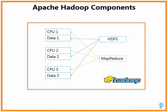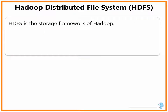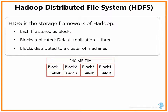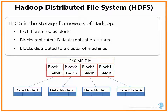Let us look at HDFS. HDFS is the storage framework of Hadoop. Each file in HDFS is stored as a block. Blocks are replicated with a default replication of 3 copies and a default block size of 64 megabytes, stored across clusters of machines. For example, if you store a 240 megabyte file into HDFS, it gets divided into 4 blocks of 64 megabytes each. If there are 4 nodes in the cluster, each block is replicated to make 3 copies, giving a total of 12 blocks, distributed so that no two replicas of the same block are on the same node.